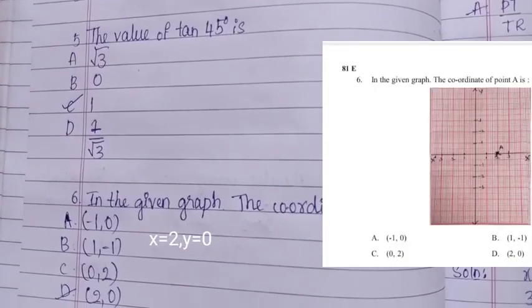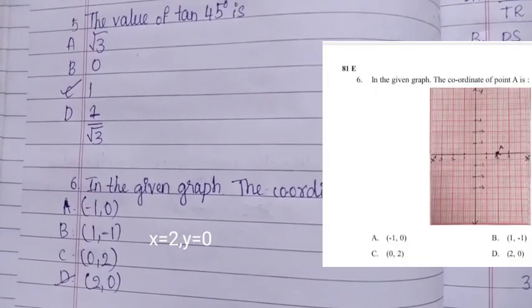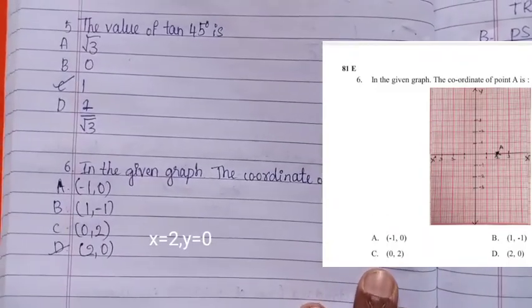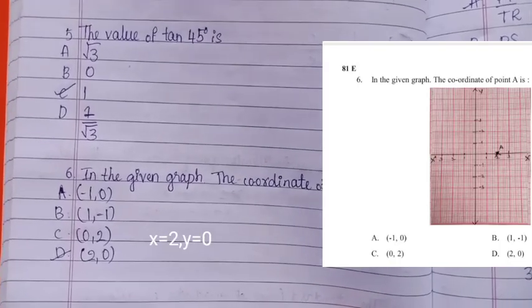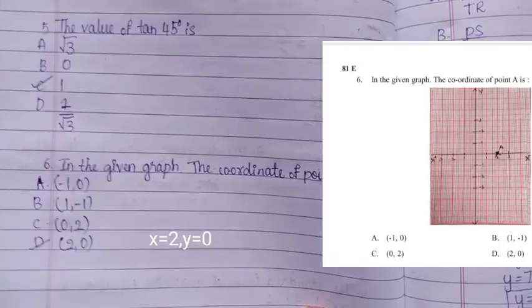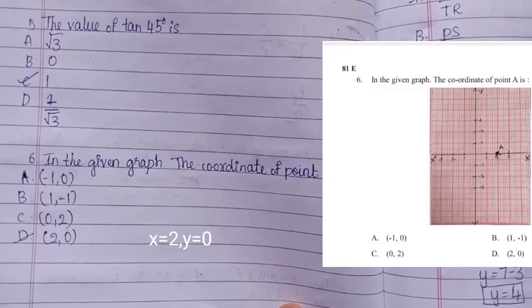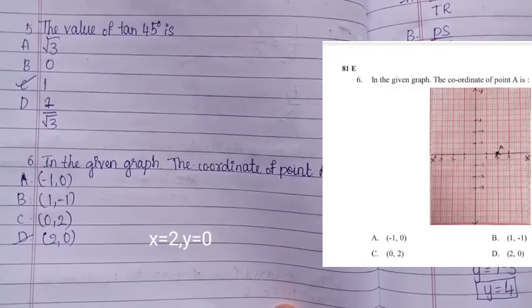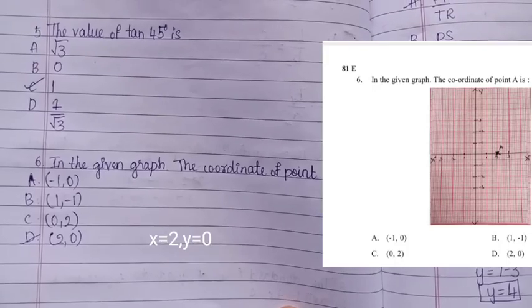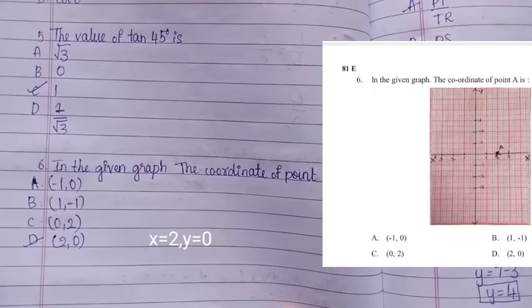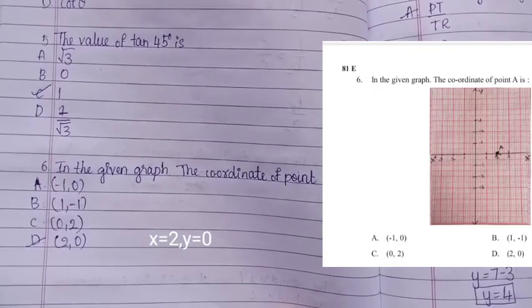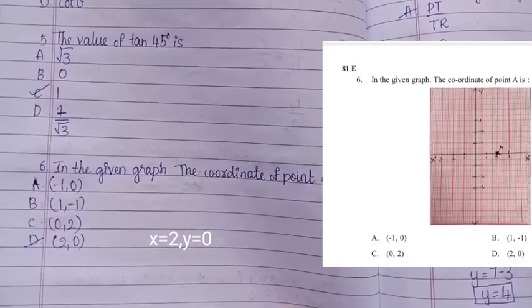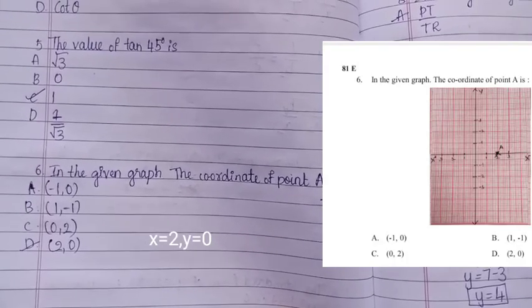In the given graph, the coordinate of point A — see the graph here. The coordinate of point A is (2, 0). Therefore the answer is D.